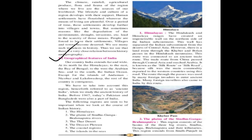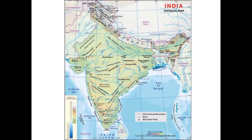Geographical features of India. India is a very huge country in size and spreads far and wide. To the north of India lies the Himalayas mountain, to the south lies the Indian Ocean, to the east lies the Bay of Bengal, and to the west lies the Arabian Sea.